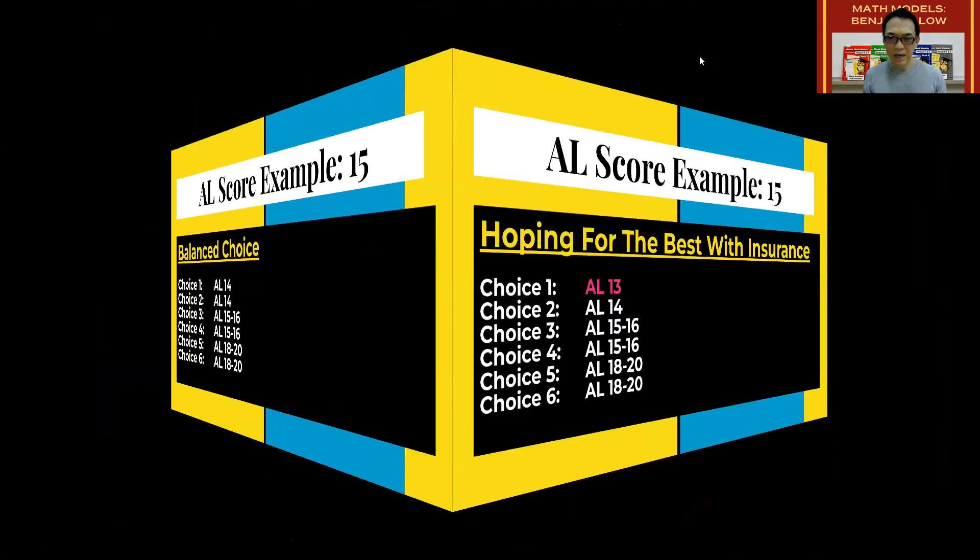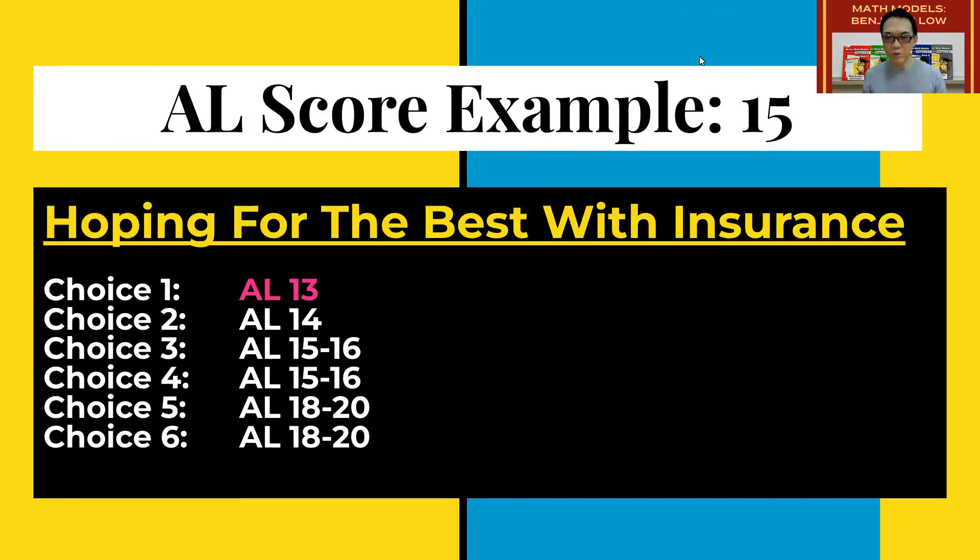And here is hoping for the best with insurance. Your first choice is two points below. Second choice is one point below. Choice three and four are where your score is. Choice five and six is a couple of points above.